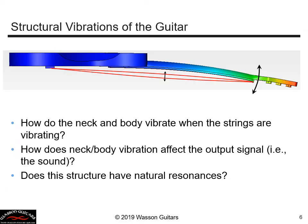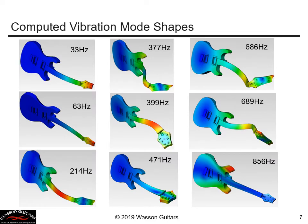It's pretty cool that we can analyze the output signal of a guitar, but what about the vibrations of the guitar itself — the body and the neck? How do the neck and body vibrate when the strings are vibrating? How does the structural vibration affect the output signal? Does the structure have natural frequencies and resonances, and how do they affect the output signal?